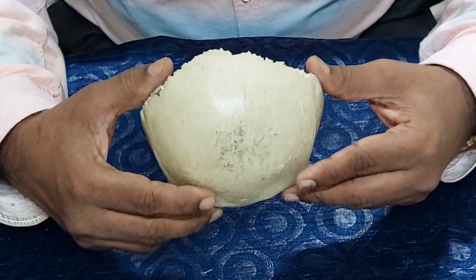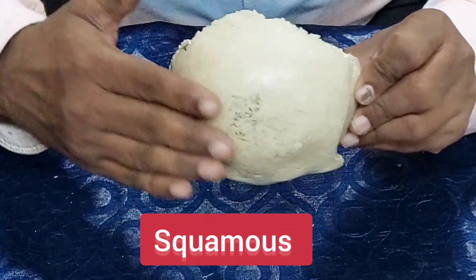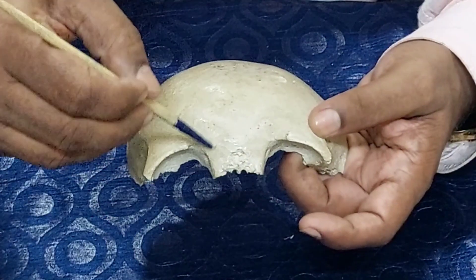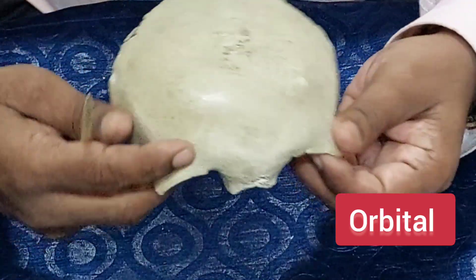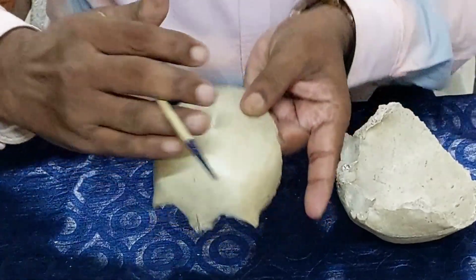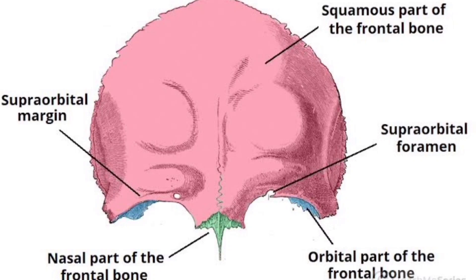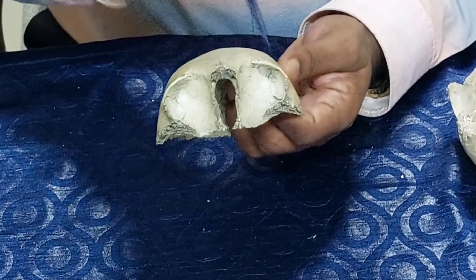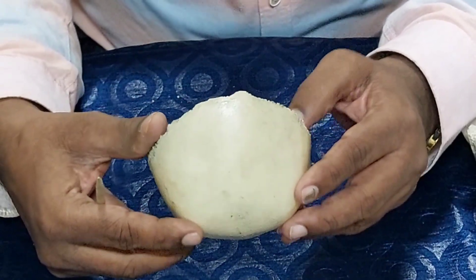The frontal bone possesses three parts: one is the squamous part — the upper part; the second is the nasal part; and the third is the orbital part. The orbital part has two plates — right and left orbital plates.